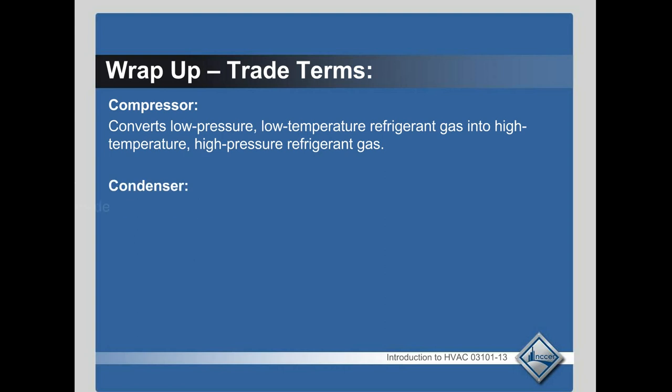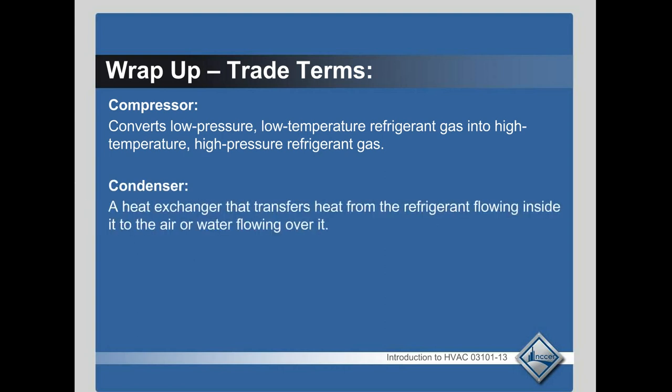The condenser — this is where we reject the heat that we remove from the refrigerator, the cooler, or the house or building. The refrigerant flows through that condenser coil and releases the heat to the outdoor air. Remember, heat flows from a substance with more heat — with molecules in motion — to a substance with less heat. So that refrigerant is heated up by the compressor and the heat is removed from the refrigerant to the outdoor air inside the condenser. It also changes the refrigerant back down to liquid from vapor.